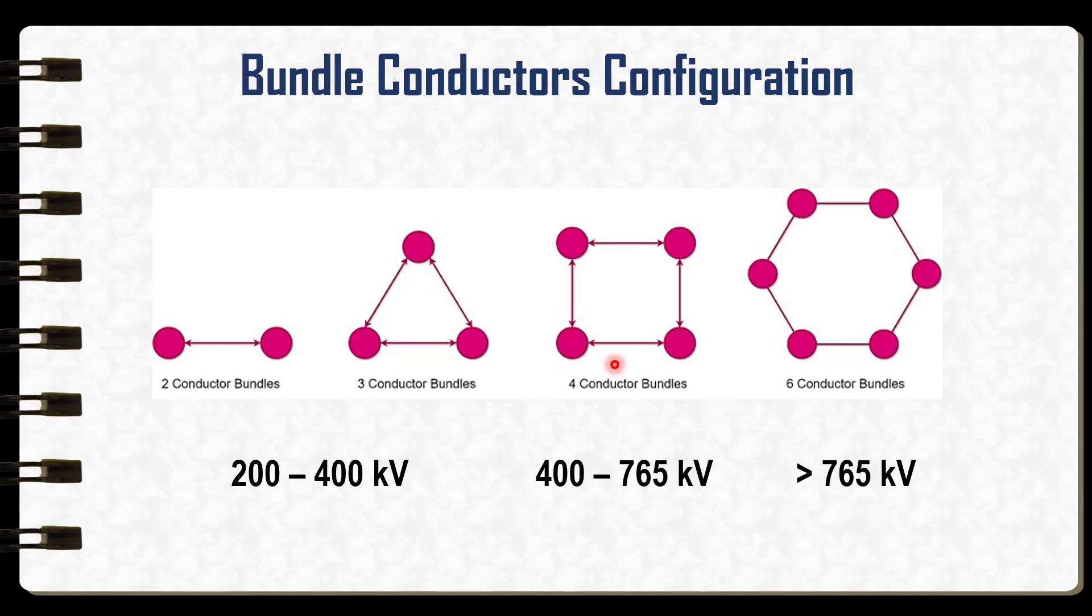For ultra high voltage transmission lines above 800 kilovolts, normally six or eight conductor bundles per phase are used to keep the line efficient. In short, the higher the system voltage, the greater the number of conductors in the bundle arrangement.